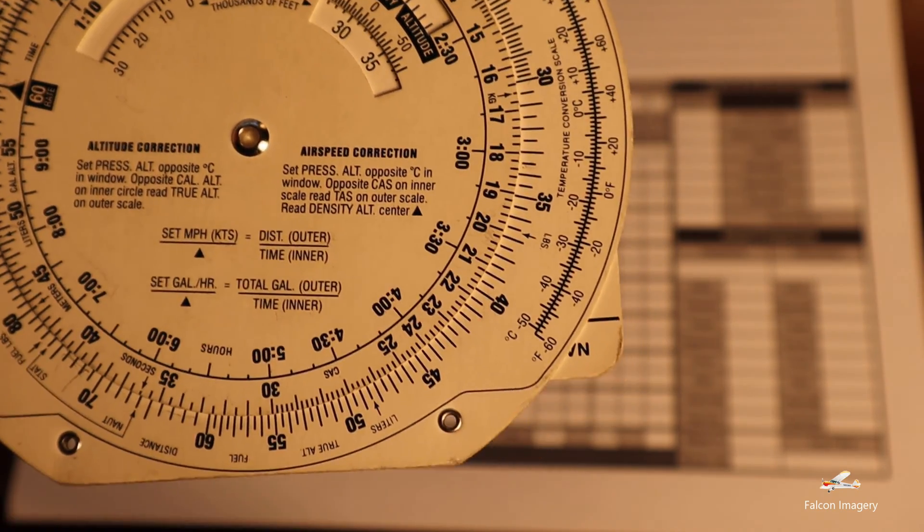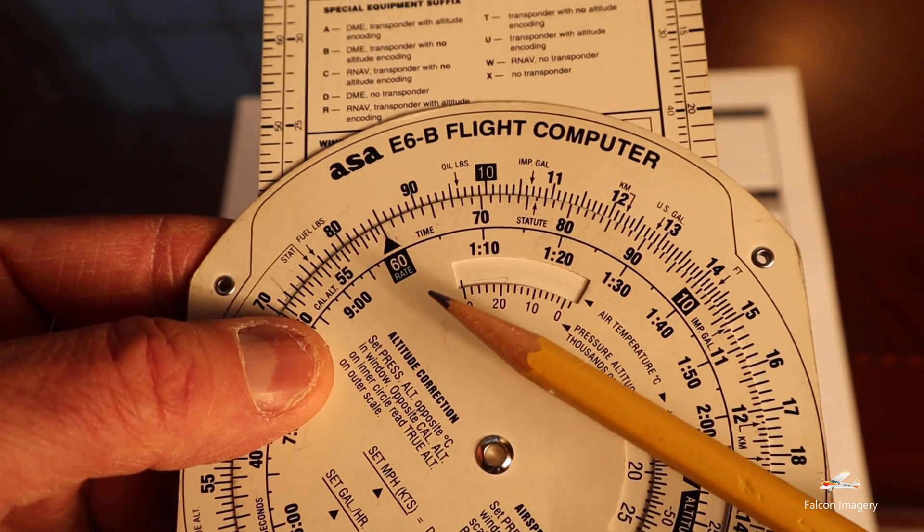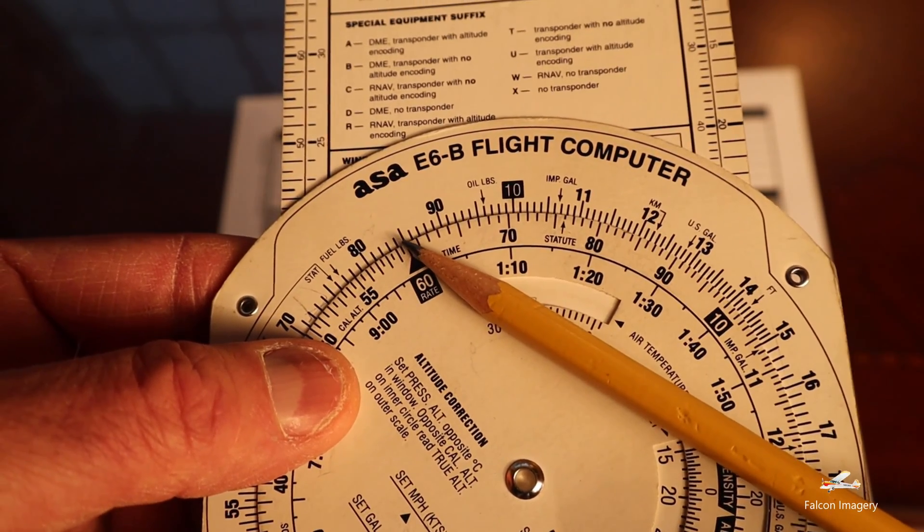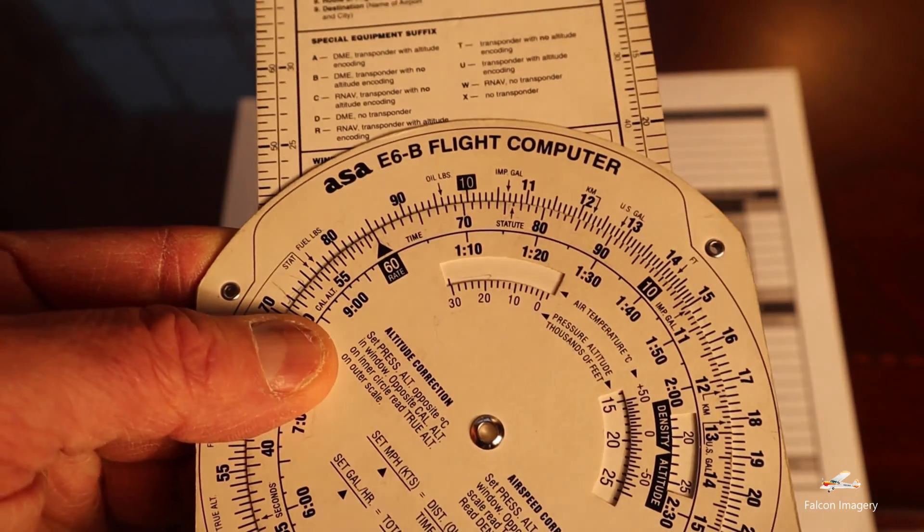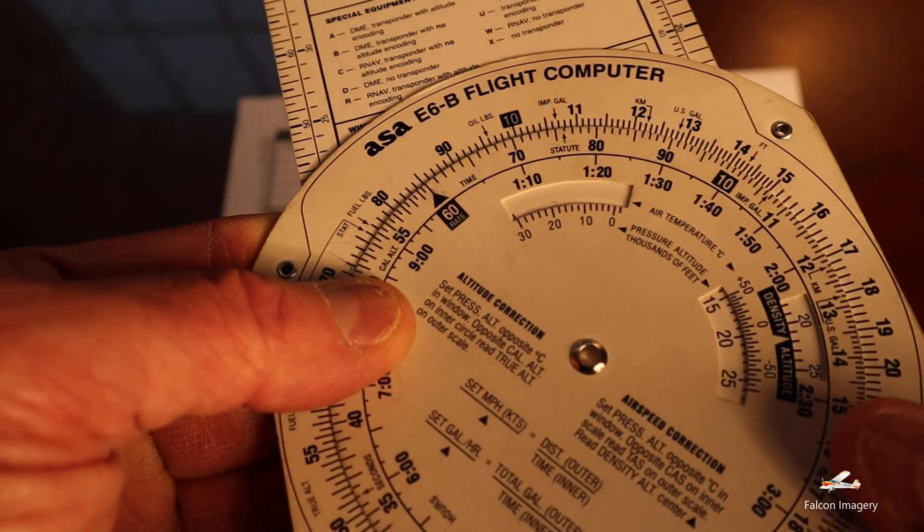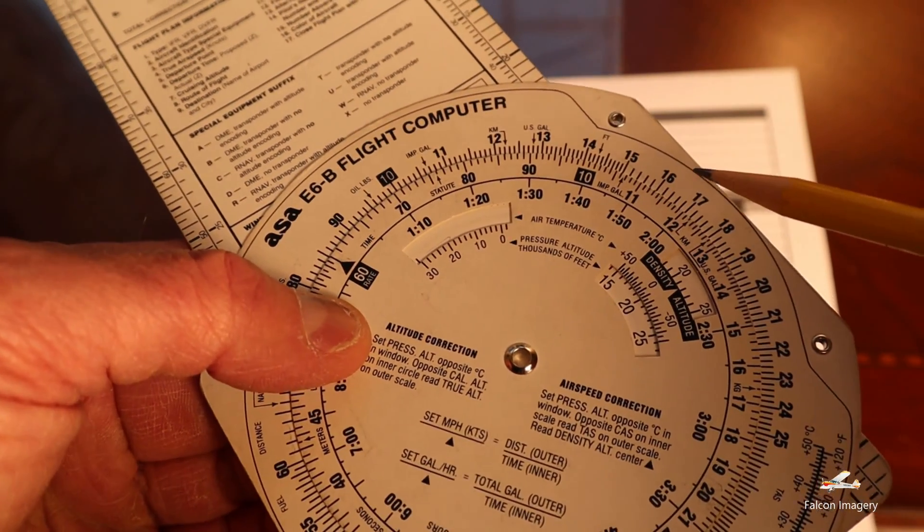So let's put this into use. Using the whiz wheel, I'm going to put the triangle underneath the eight and a half gallons per hour fuel burn. Then while holding that fixed with my fingers and thumb, I'm going to look for the amount of time on this inner ring that I anticipate flying.